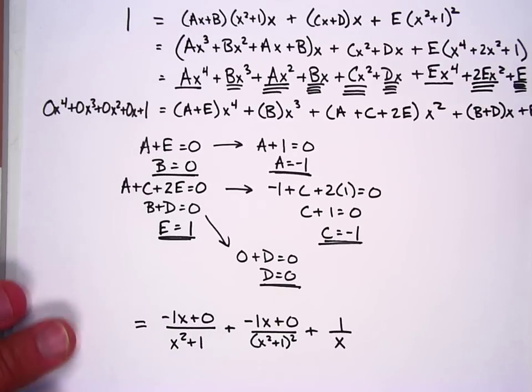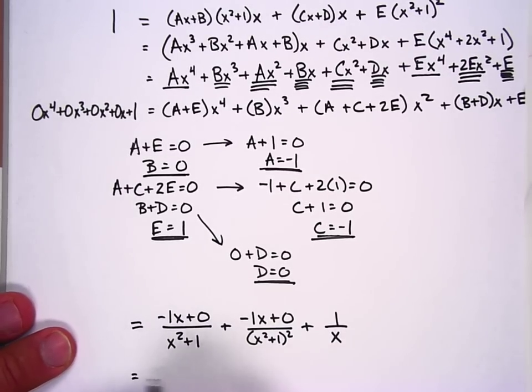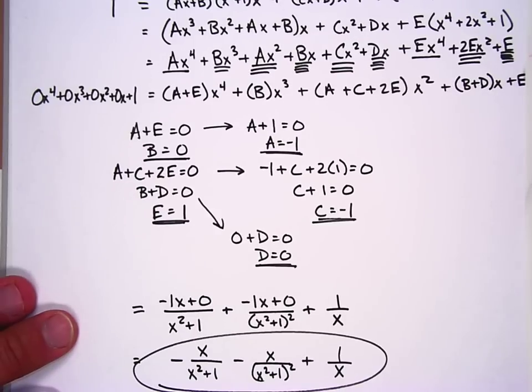Now, we don't like having those zeros in there. We also don't like this plus minus. So what we're going to do is we're going to say negative x over (x squared plus one) minus x over (x squared plus one) squared plus one over x. That's a lot of work.